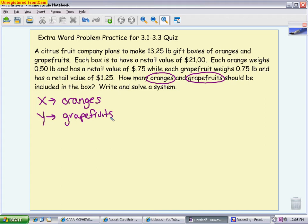Starting with weight, I know each orange weighs half a pound because of what they tell me right here. So 0.5 for every orange. I know that every grapefruit weighs 0.75 a pound or three quarters of a pound, so 0.75Y. And I know the total is 13.25 pounds. So there is an equation based on the weight of the fruit.